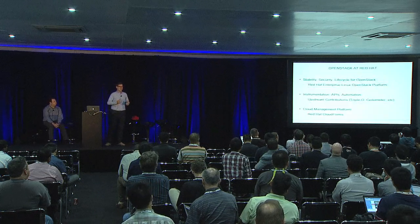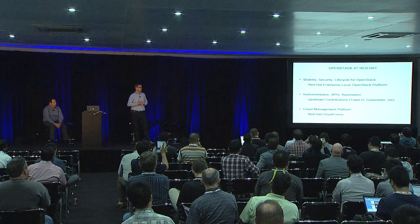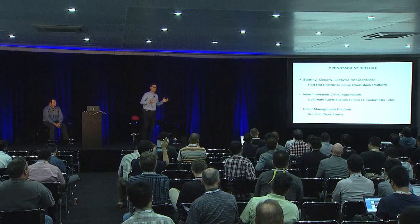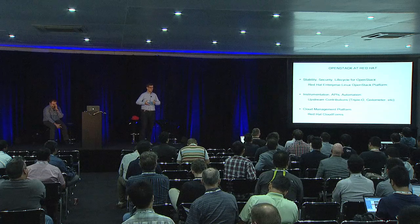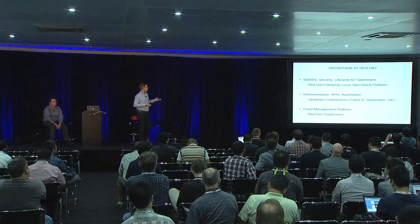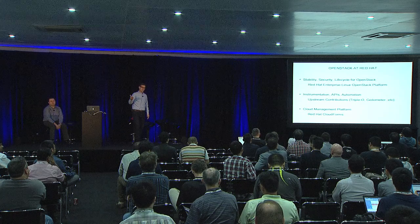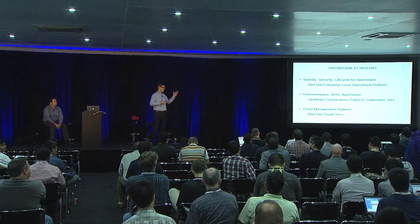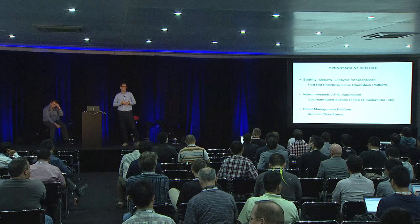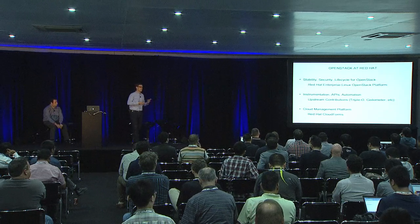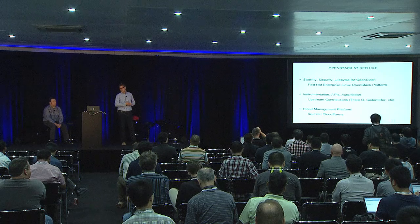When we talk about OpenStack at Red Hat, there are three key areas. First is Red Hat Enterprise Linux OpenStack platform, providing a stable, secure lifecycle for OpenStack — similar to what we do going from Fedora to RHEL. The second is instrumentation APIs and automation, including community work on Tusker, Triple O, and Ceilometer — all the instrumentation required to bring a cloud management platform on top. Third is cloud management platforms: Red Hat CloudForms, which leverages those instrumentation APIs and automation to provide a hybrid cloud management solution on top of OpenStack.